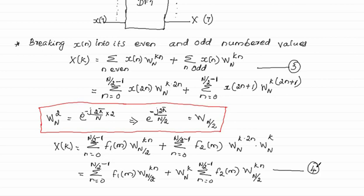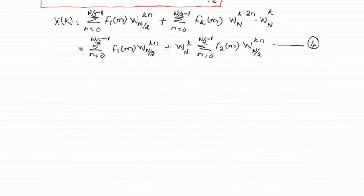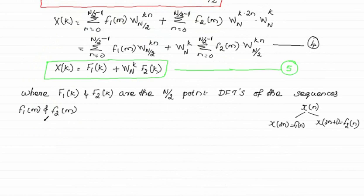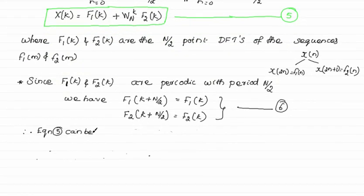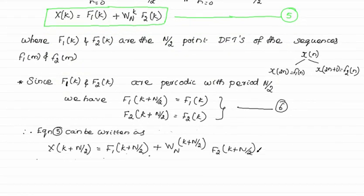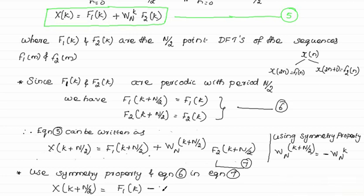Note: f1 and f2 indices should be n, not m. The first term is the DFT of sequence f1[n], giving F1[k], and the second term is the DFT of f2[n] giving F2[k], multiplied by W_N^k. Here F1[k] and F2[k] are the N/2-point DFTs of f1[n] and f2[n]. Since F1[k] and F2[k] are periodic with period N/2, F1[k + N/2] = F1[k] and F2[k + N/2] = F2[k]. In equation 5 we replace k by k + N/2, and in the second term we apply the symmetric property.